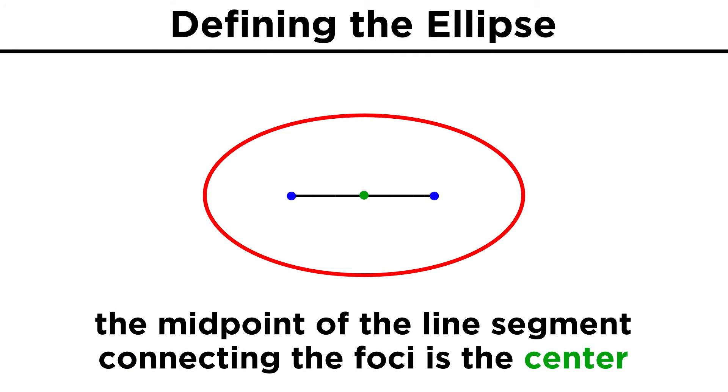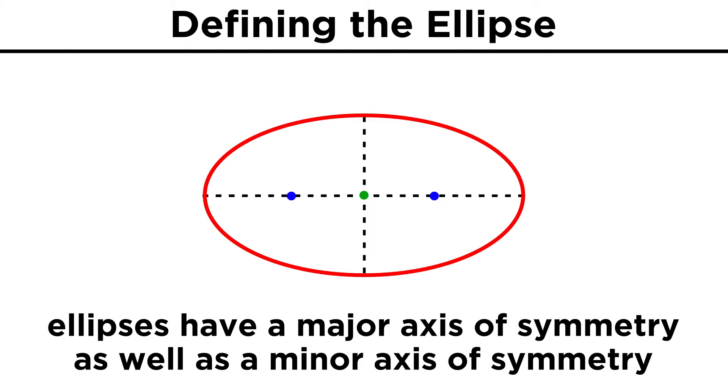The midpoint of the line segment that connects the foci is the center of the ellipse. Ellipses also have two axes of symmetry, a major axis, which will be the longer one, and a minor axis, which is the shorter one.